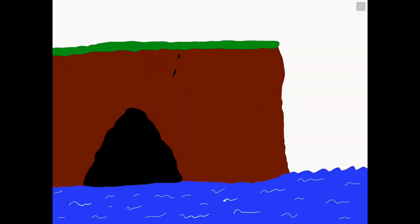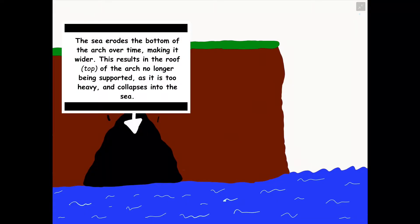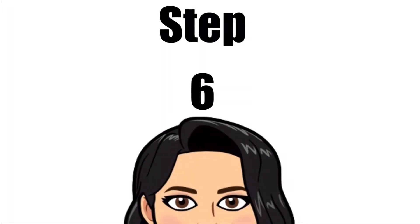Step five is when we have the arch itself growing wider over time because the bottom or the base of the arch is being eroded constantly by the sea. This results in the roof or the top of the arch no longer being supported as the material that was inside the arch is now completely eroded and therefore the roof of the arch is now too heavy and is left unsupported and it eventually will fall and collapse into the sea.